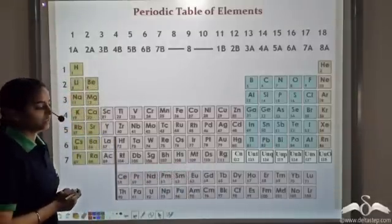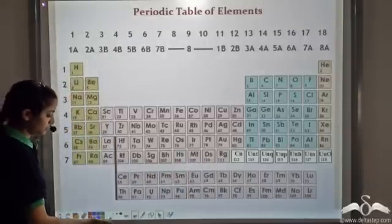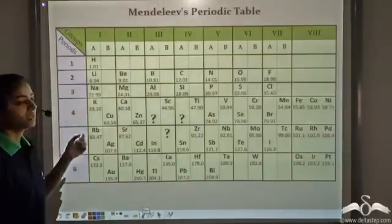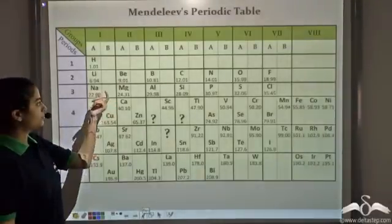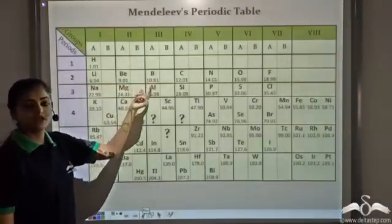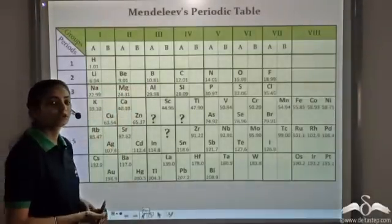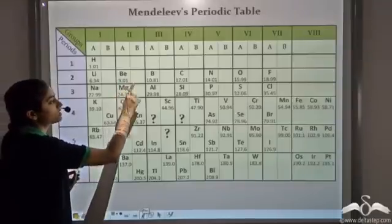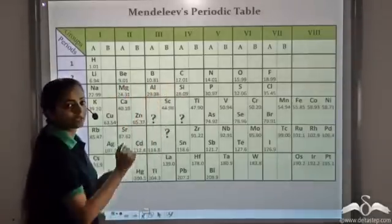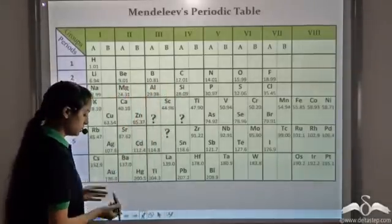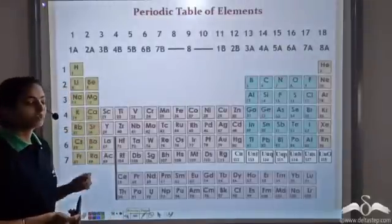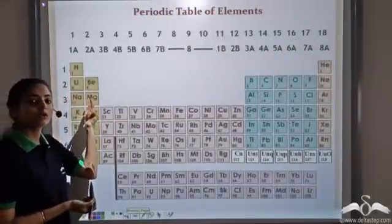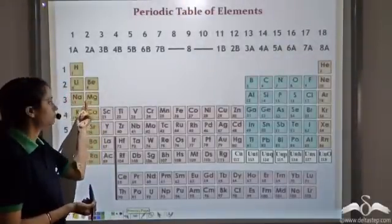Let's compare it with Mendeleev's periodic table. In Mendeleev's periodic table, the elements are arranged in increasing order of atomic mass, and the change of atomic mass is not very gradual. In the modern periodic table, the elements are arranged in increasing order of atomic number.